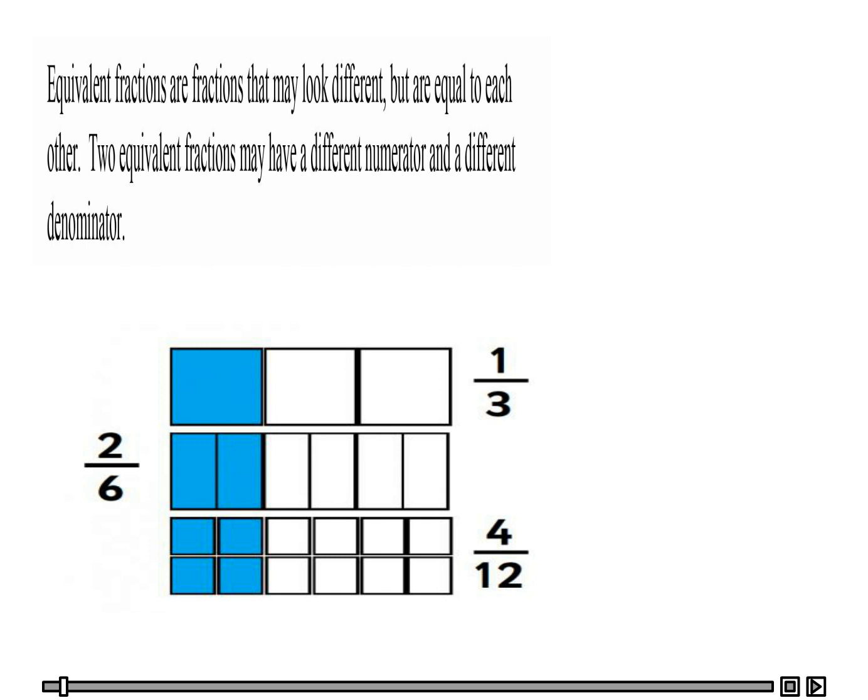Let's go ahead and read what we have here. It says equivalent fractions are fractions that look different, so we'll circle the look different, but are equal to each other. So they are equal to each other. Then it goes on to say two equivalent fractions may have a different numerator and a different denominator.